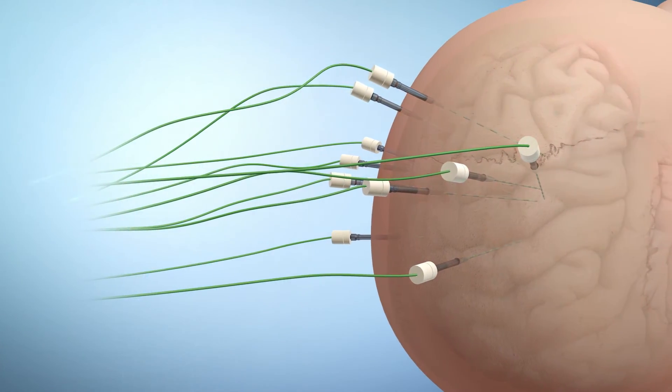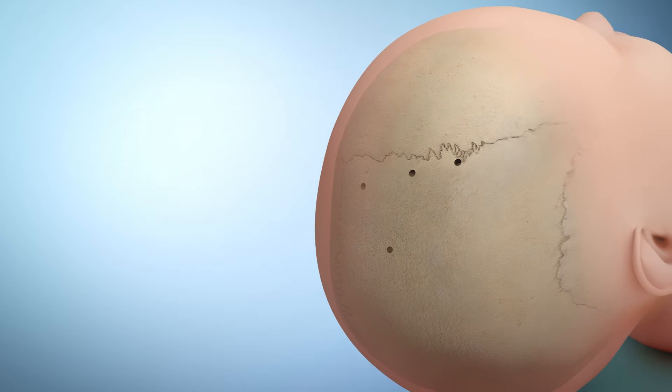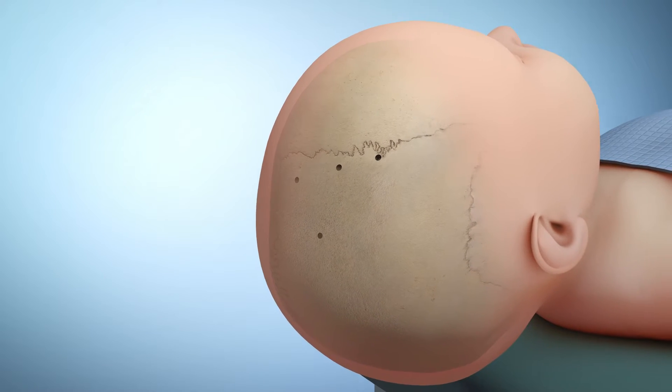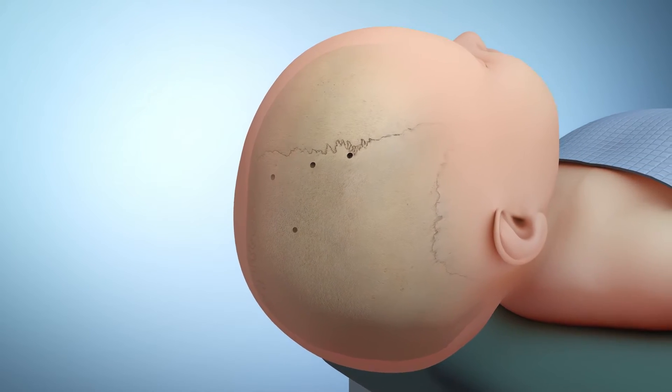Once the recording is completed, the electrodes will be removed from the brain. This procedure takes 15 to 30 minutes in the operating room under general anesthesia.